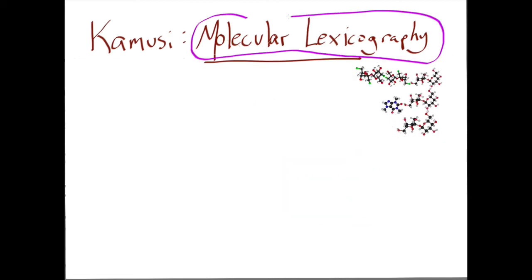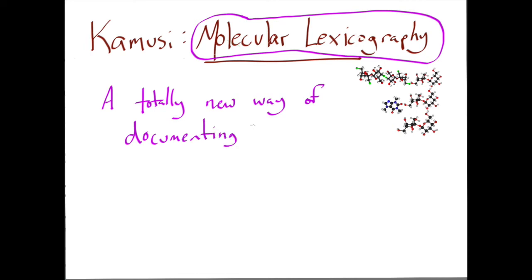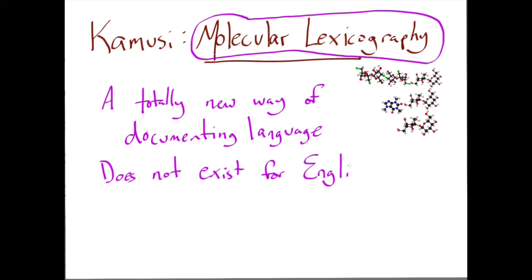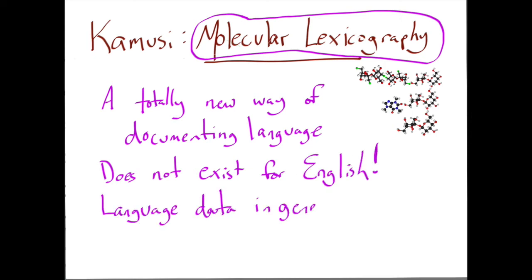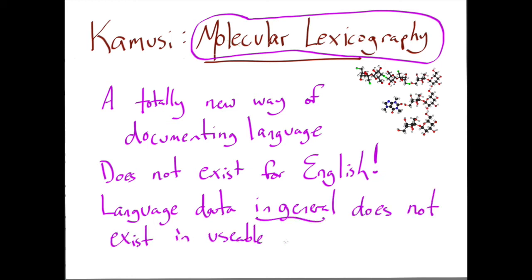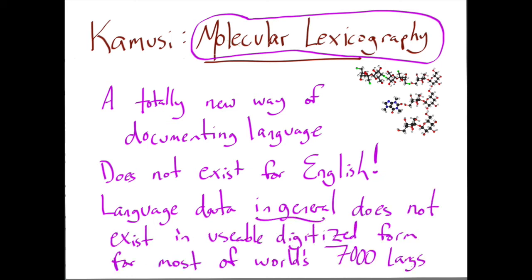Molecular lexicography is a completely new way of conceiving how to document language. It hasn't even been attempted at this level for English, which is the best documented, best resourced language out there. For most languages spoken by billions of people, this sort of data just does not exist — it's in people's heads, but it's not in digitized form.